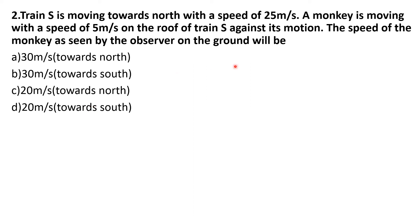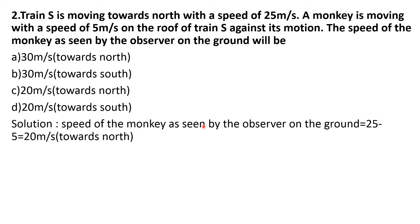Here you have to find the speed of the monkey as seen by the observer on the ground. The monkey is moving on the roof of train against the motion of train S. The train is moving with a speed of 25 m/s and the monkey is moving with a speed of 5 m/s. Since they are moving in opposite directions, 25 minus 5 gives 20 meter per second towards north. So the answer is option C, 20 meter per second towards north.